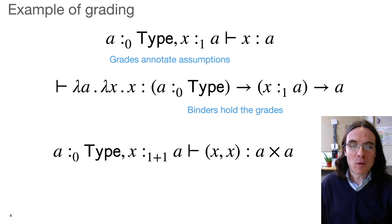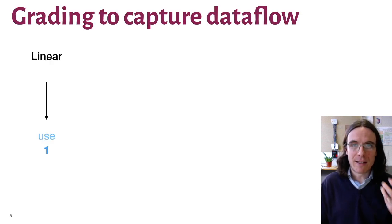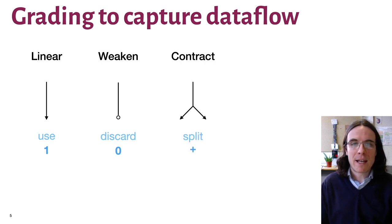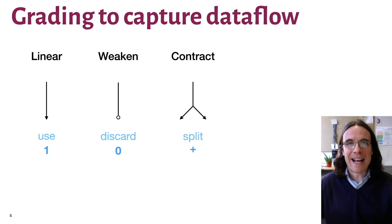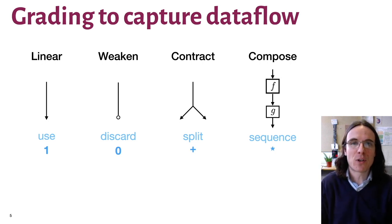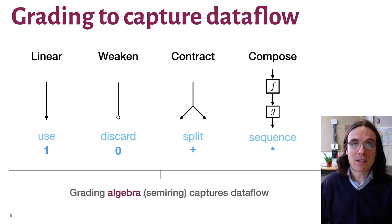And if we have more interesting data flow, for example, we're trying to build the term X pair X, then we see that X is used twice. And that's represented by this grade here that says that X is used once in this sub-term plus the usage of one in this sub-term. And in type theories that are based on this idea, they have a semi-ring parameterizing them, which captures the data flow inherent to the structural rules of the type theory. So when we use a variable, it's a linear use that's counted by one of a semi-ring. If we don't use a variable, then it's accounted for by zero of the semi-ring. If a variable is used in two sub-terms, then its grades are added using the additive part of the semi-ring. And if we sequentially compose parts of our program via a cut, via a substitution, then the multiplicative part of the semi-ring is used to multiply the grades. And so these systems are parameterized by a semi-ring that captures the data flow.